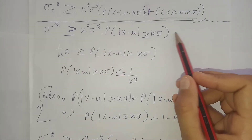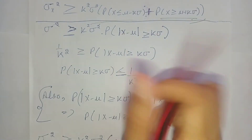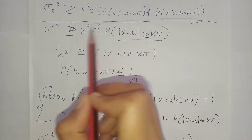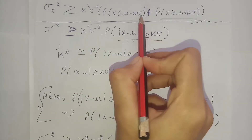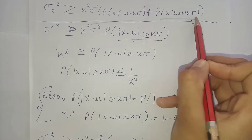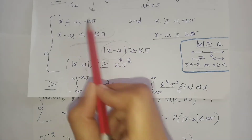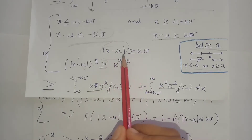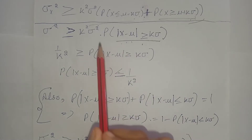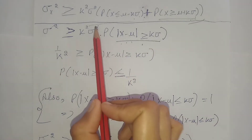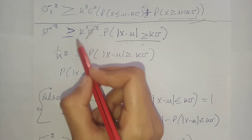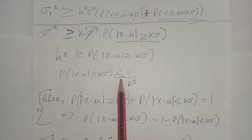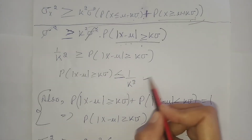To prove the first statement, we combine the two outer integrals. Using the modulus definition — x minus mu greater than or equal to k sigma — we combine the two regions. Then sigma squared cancels out, and we arrive at the first statement of Chebyshev's inequality.